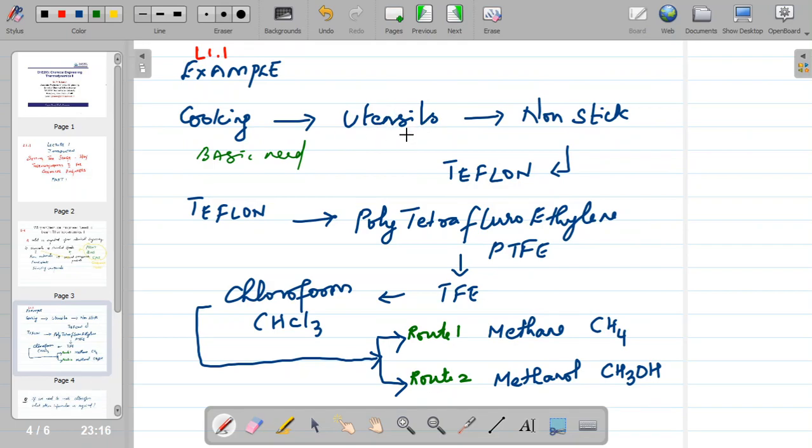So we need to cook the food and for cooking we require some utensils, some cookware items. One of those broad cookware items that we conventionally use now is nonstick cookware items because we don't want food to stick to it, we want it easy to wash. So this nonstick is very popularly known by a trade name that you see as Teflon.